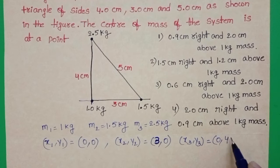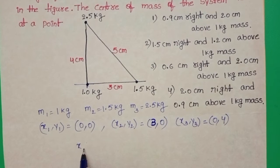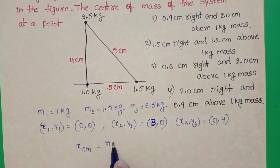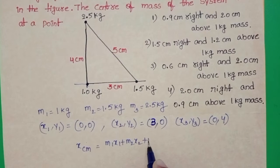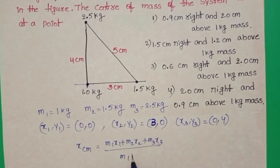0, 4. To find out the center of mass of the system, take x_cm equals m1·x1 + m2·x2 + m3·x3 divided by m1 + m2 + m3.